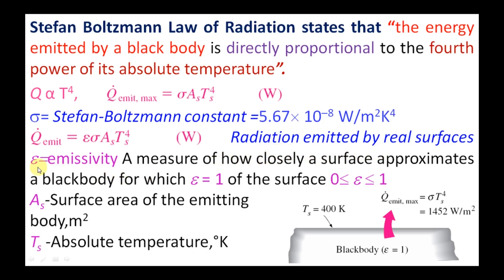And that is expressed in terms of ε, that is the measure of how closely a surface approximates a black body, for which ε = 1. And for the actual surface it will be varying between 0 to 1, usually it will be less than 1.